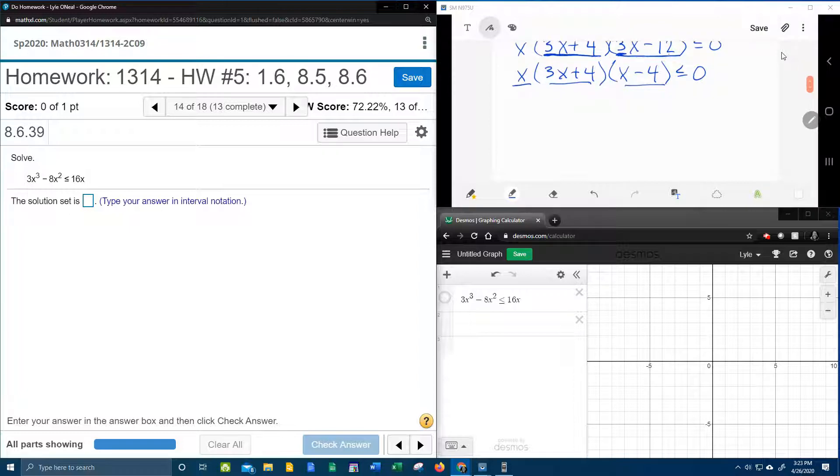Every one of those factors is going to produce a critical point. So if I set each one of those equal to 0, we can see that x equals 0 is a critical point.